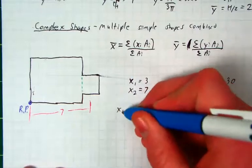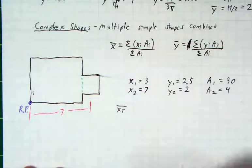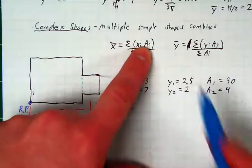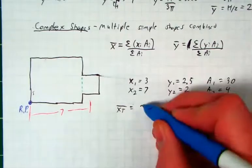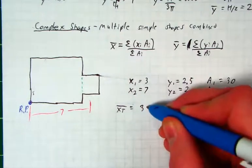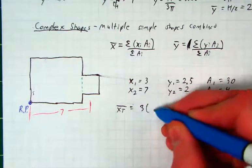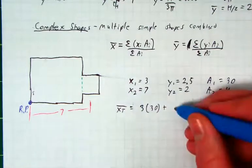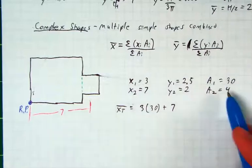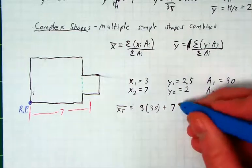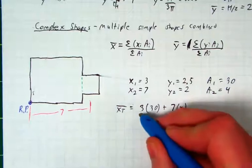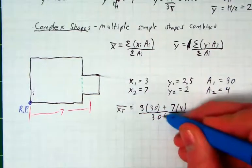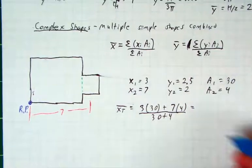So now what I do, if I want to find my x total, is I'll just plug it in. I'm going to add up all my individual x's multiplied by the area. So my first individual x was three. The individual area was 30. So three times 30 plus my other individual x, which was seven, times its individual area, which was four. And divide that by the sum of all areas. The first area was 30. The second one was four.